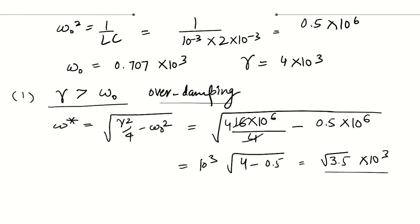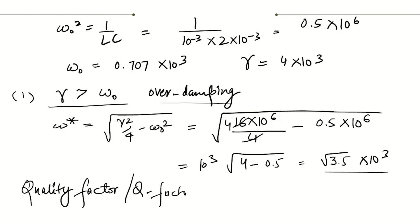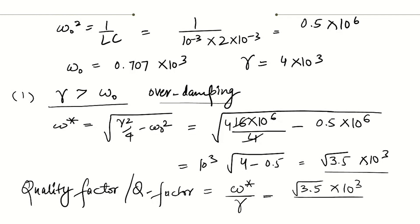Now we have to find the quality factor. The quality factor Q relates the damping in the circuit. We find it as ω*/γ, where ω* is the damped oscillation frequency and γ is the damping factor. So Q = (√3.5 × 10³) / (4 × 10³), which equals approximately 0.46. This is our quality factor for this circuit. Since the quality factor is less than 0.5, this confirms it is an overdamped circuit.